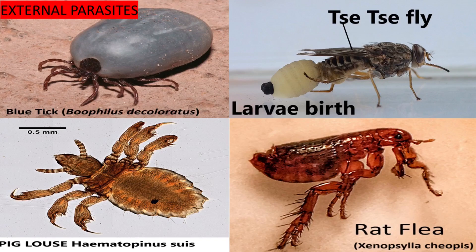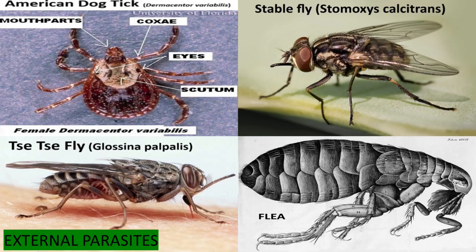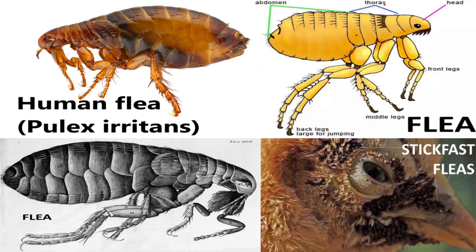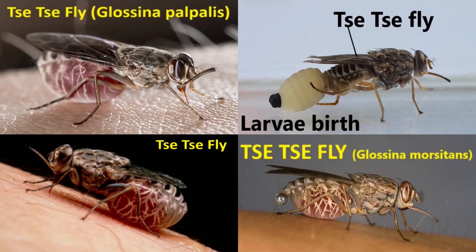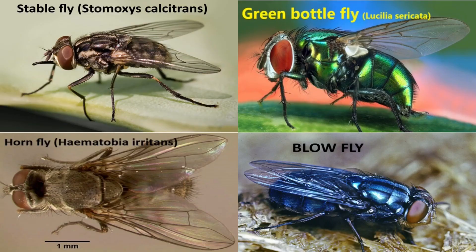External parasites in livestock include ticks, fleas, lice, tsetse flies, mites, and flies. These organisms live on or feed from the bodies of livestock animals, causing a range of health problems.